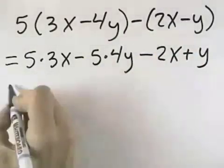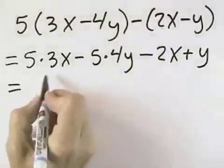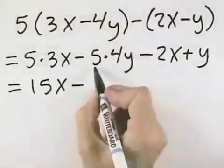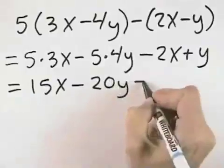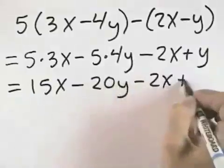So if we do the multiplication, we have 5 times 3x is 15x, minus 5 times 4y is 20y. Then we have minus 2x and plus y.